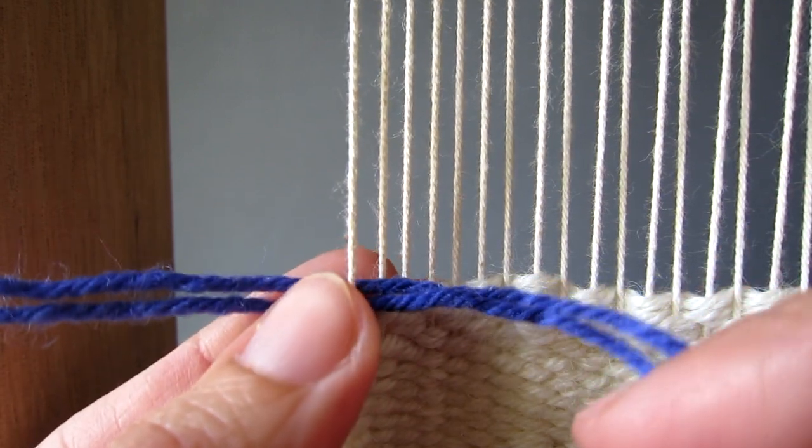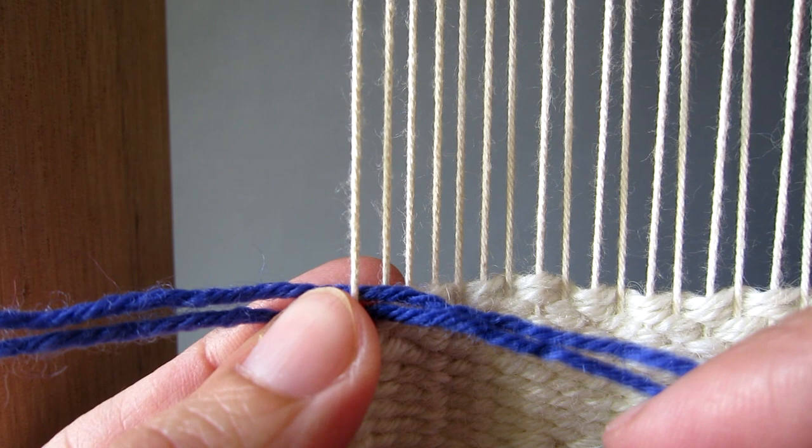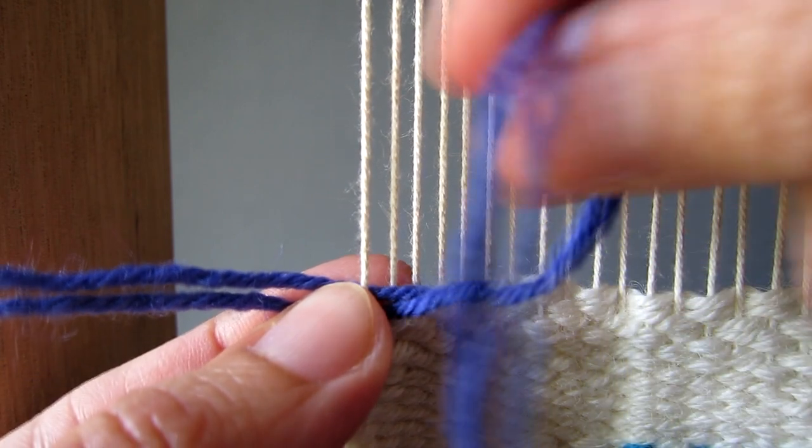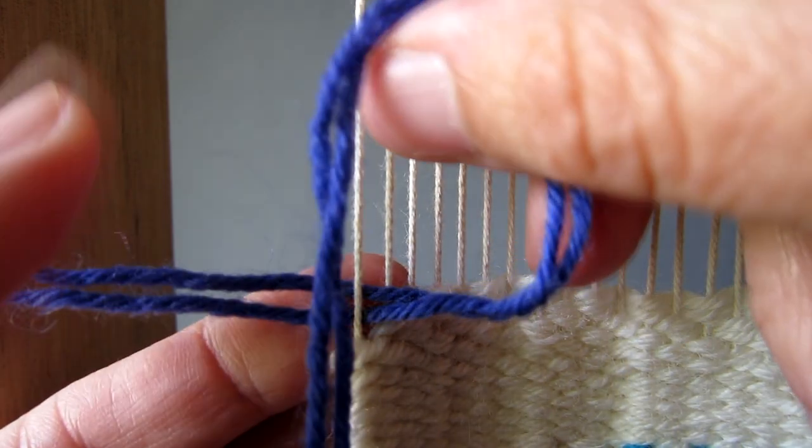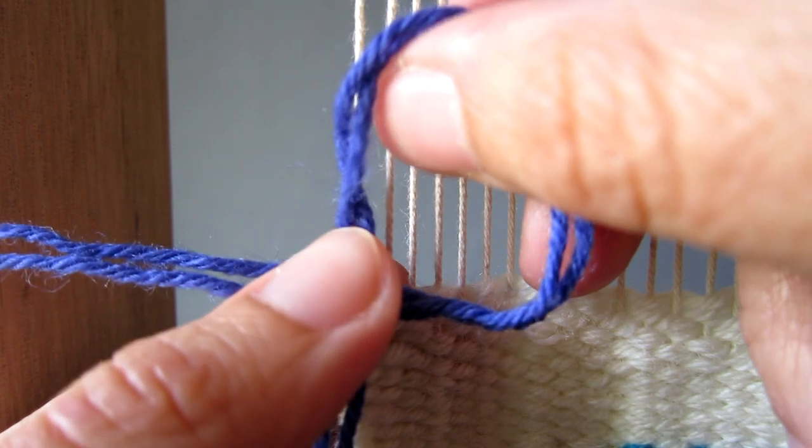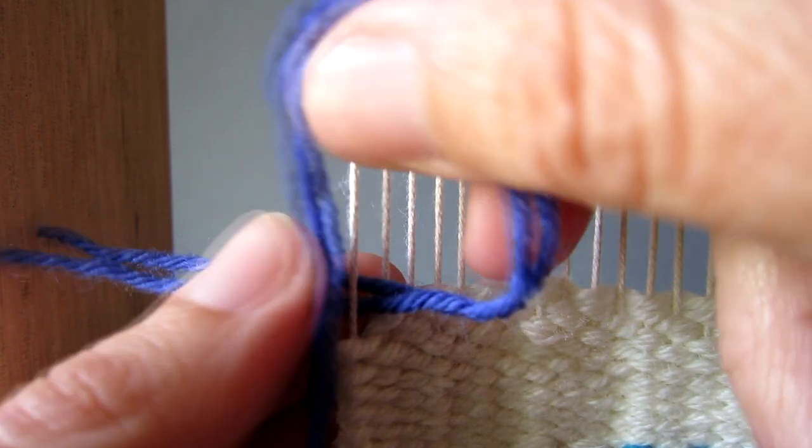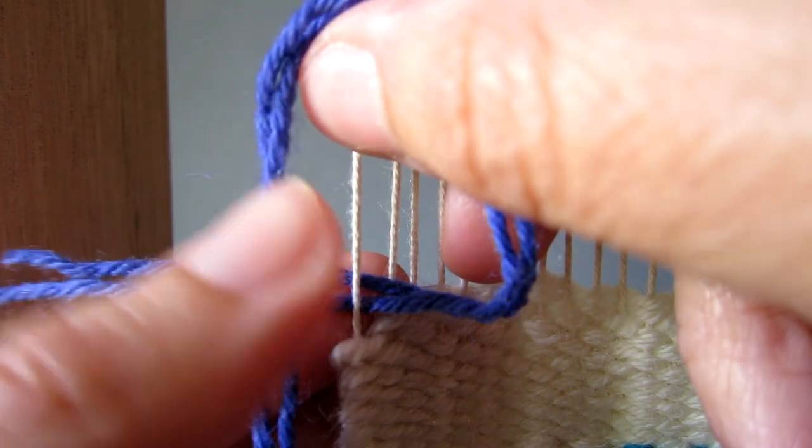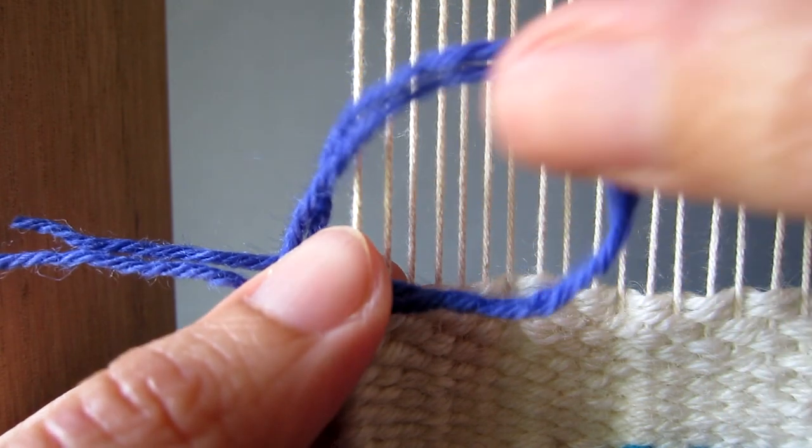Then holding the thread in place with your left hand, take the other end and twisting in a clockwise direction, make a loop above the weaving area. It should look a little like a capital D with the yarn hanging down to the left of the first warp thread.